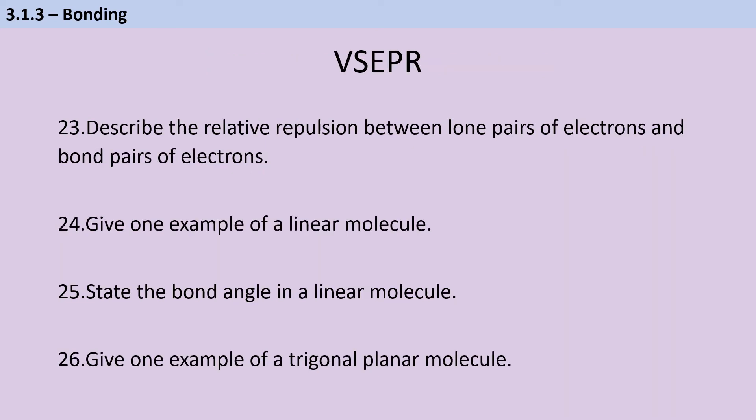The repulsion between two lone pairs of electrons is stronger than the repulsion between one lone pair and a bonding pair. And both of those are stronger than the repulsion between two bonding pairs of electrons. Now, that's important because the only way in which it's possible to accommodate the lone pairs being further apart because they're repelling each other more is to reduce the bonding angle between the bond pairs. And that's going to be reduced by about two and a half degrees per lone pair.